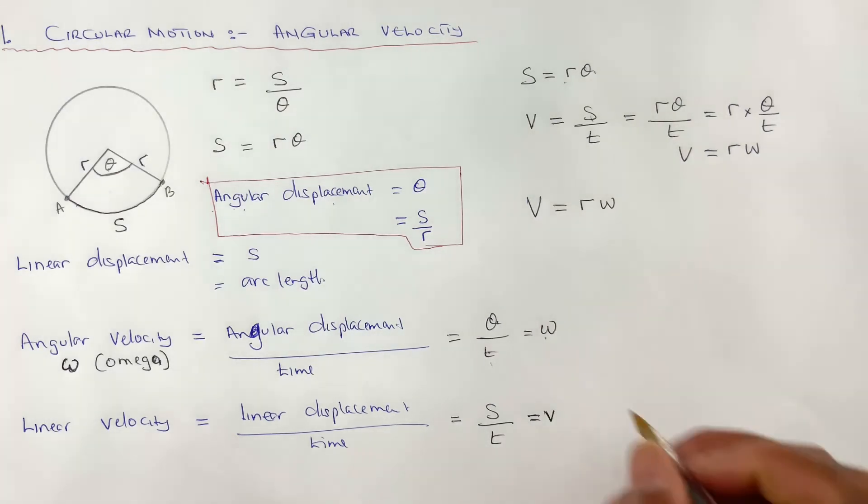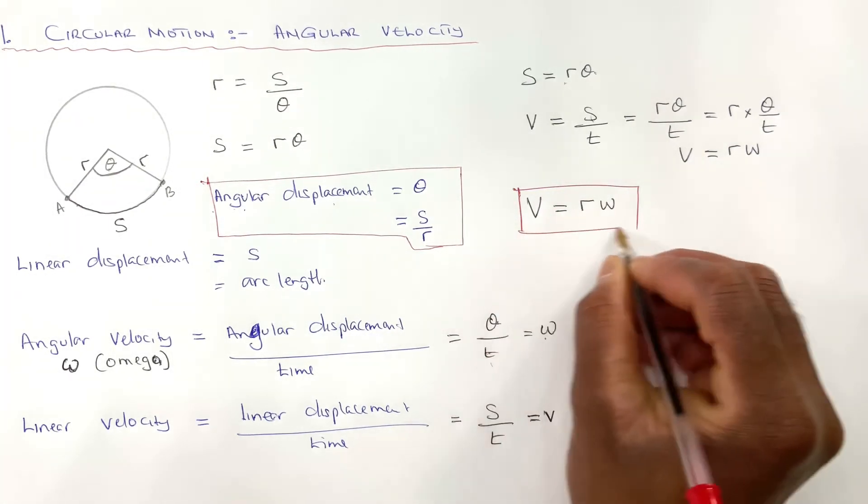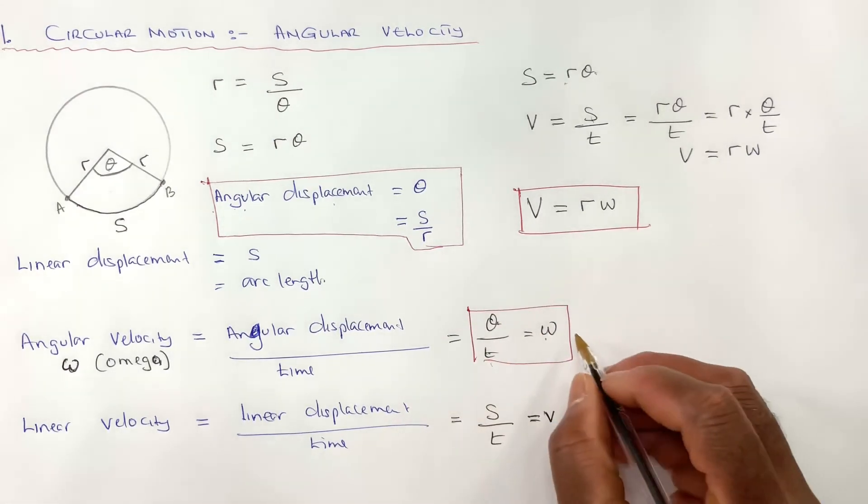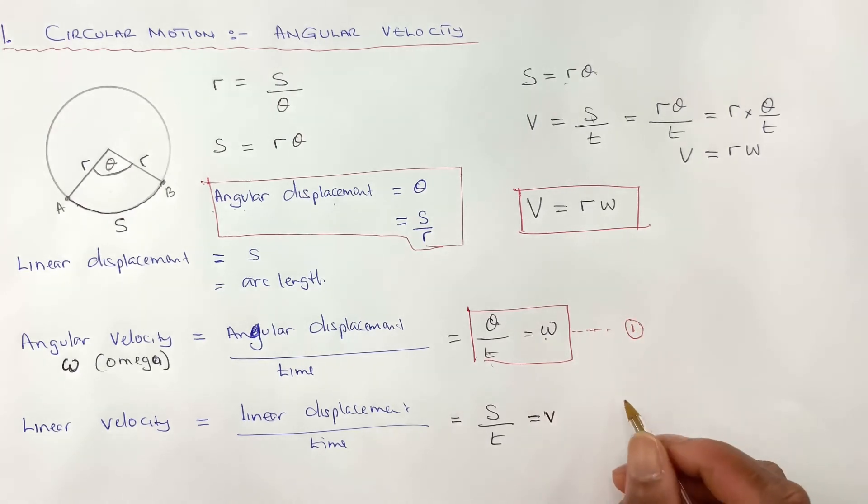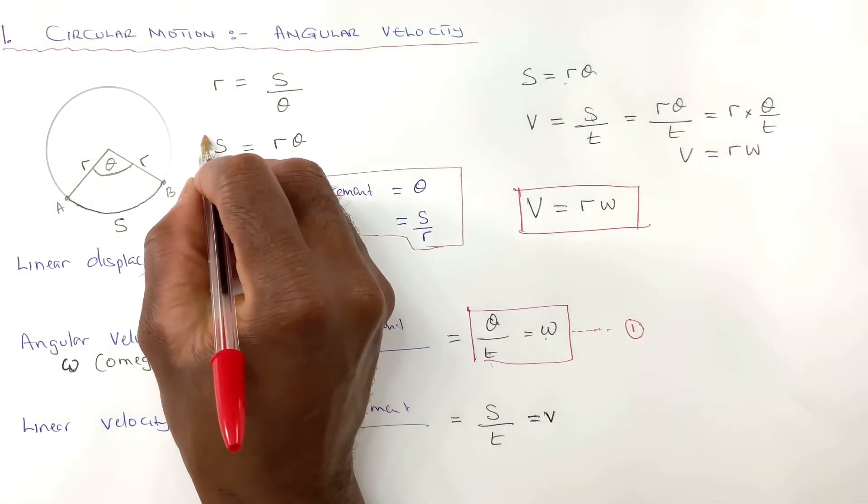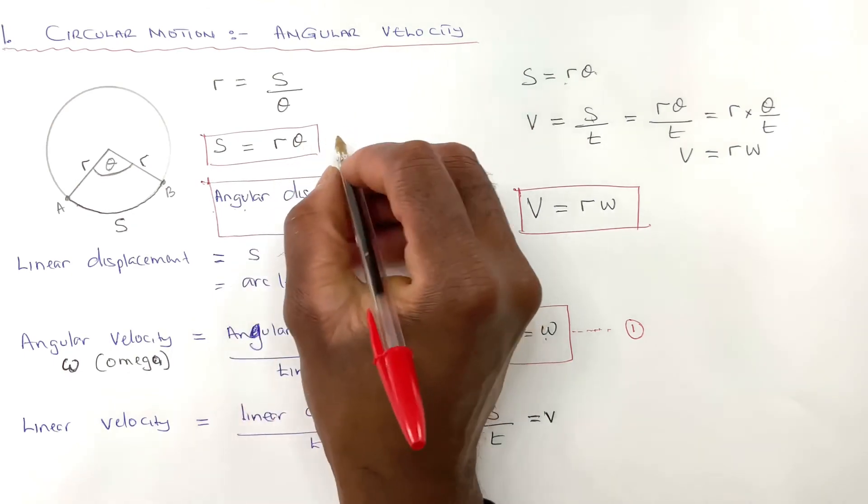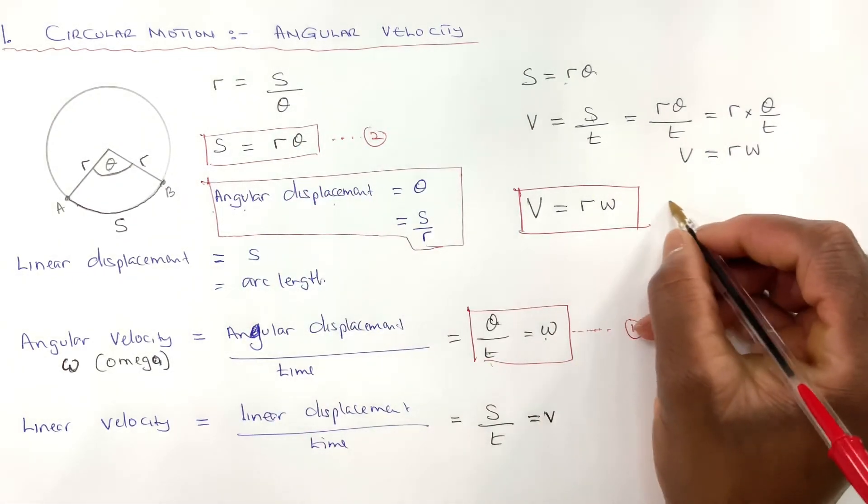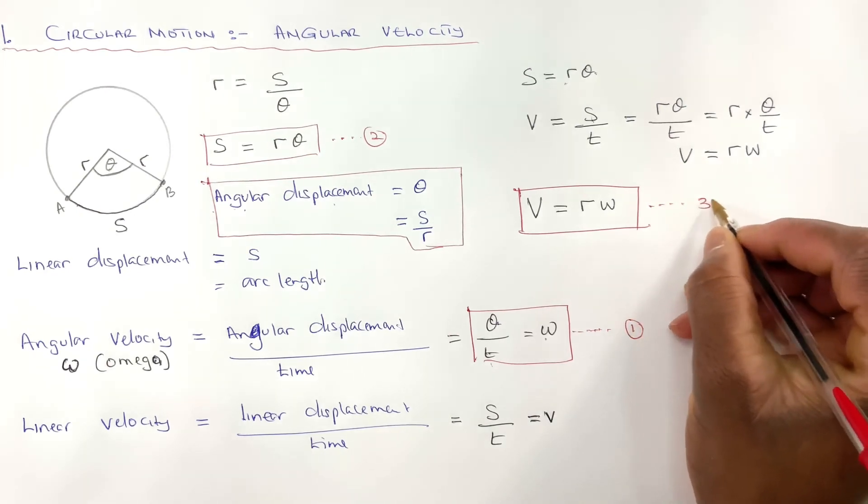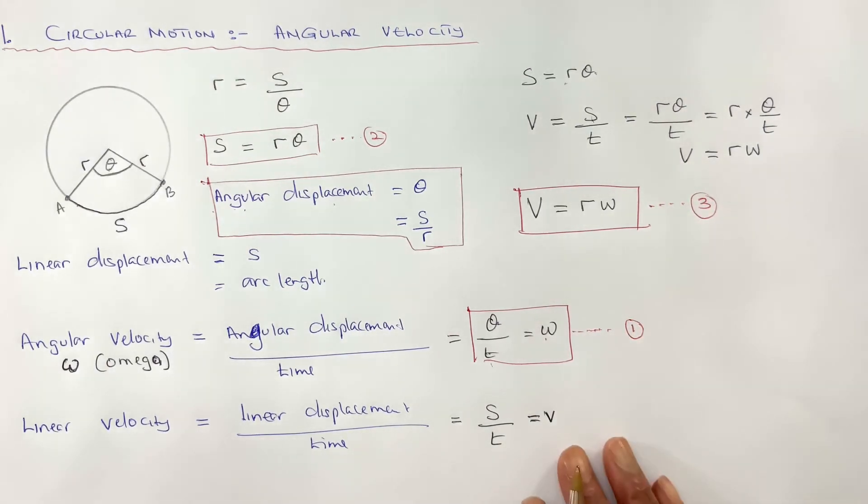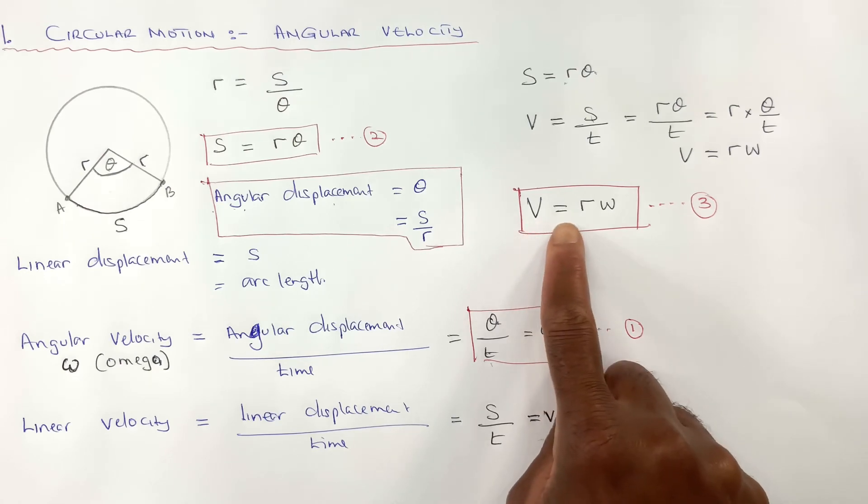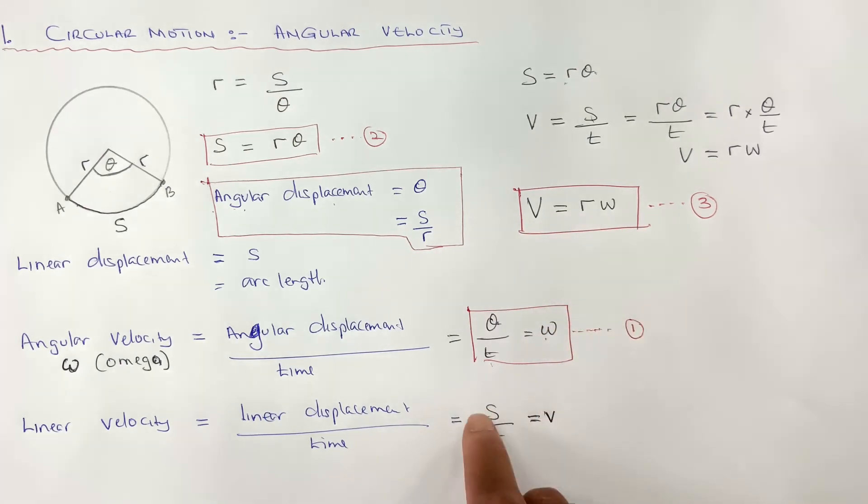So that's the second important equation. Apart from the third equation, which is very important. That is also important. But this is a third important equation. Right. So we can see that linear velocity is equal to radius times angular velocity.